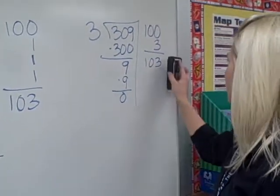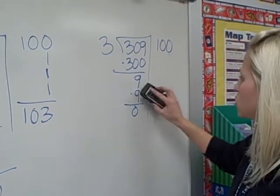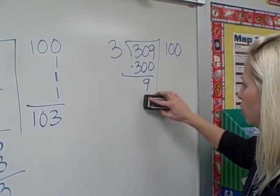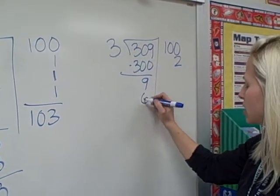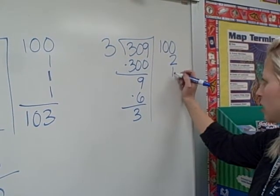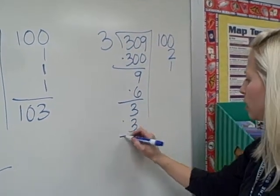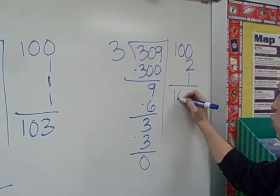But if you make a mistake, if instead of using the number 3 you decide to use the number 2, we'll go back to this part, you could use the number 2 here, no problem. 2 times 3 is 6, you subtract and you've got 3 and then you could do 3 times 1. 1 times 3 is 3 and you still get the same answer, 103.